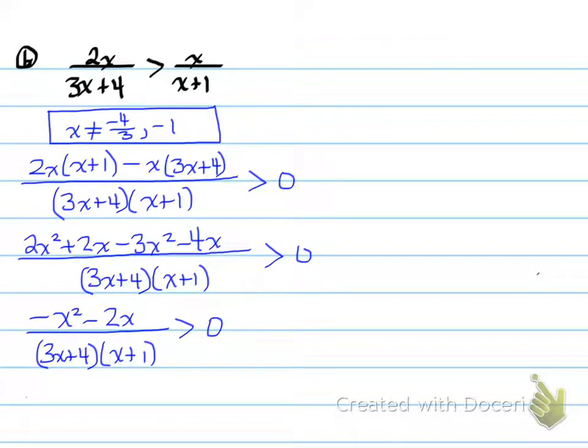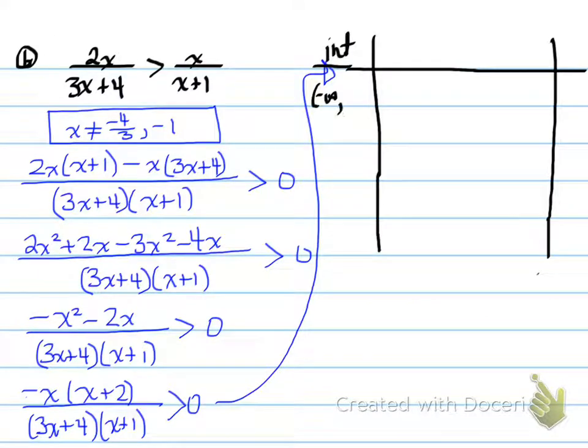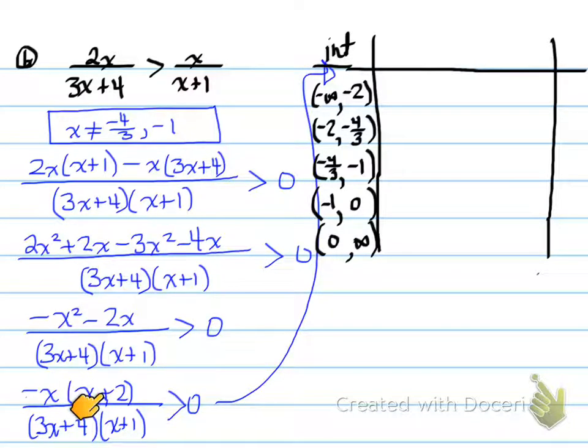We can get some factors here. We common factor negative x times x plus 2. We're going to create our table. Our interval chart goes from negative infinity up to, don't forget, we're comparing this value, this value, and the restrictions. We start with the left-most value, from negative infinity to negative 2, negative 2 to negative 4 over 3, negative 4 over 3 to negative 1, negative 1 to 0, and 0 to infinity. The negative 2 comes from this value. The negative 4 over 3 comes from this value. The negative 1 comes from here, and the 0 comes from the x alone. Now we have our test points, and we use our equation.